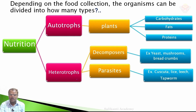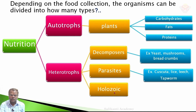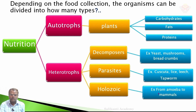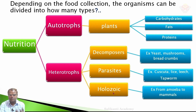They collect their nutrients and take them in as holozoic nutrition. From unicellular organisms like amoeba to multicellular organisms like mammals, they take their nutrients by swallowing complete food. This type of nutrition is known as holozoic nutrition.